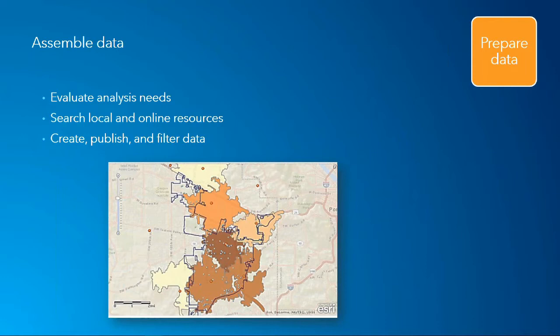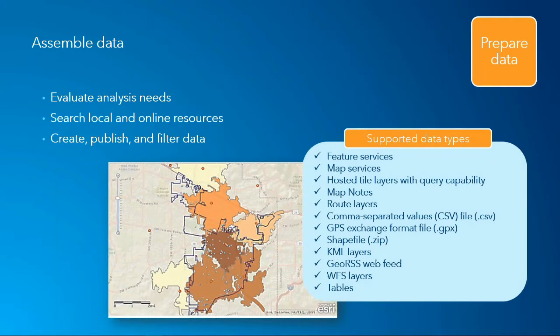In the prepare data step, this is assembling all the data needed for your analysis. Based on the question you're setting out to answer, what data sets do you need and where can you find them? It might be data your organization maintains locally, something you've already published online, or an external data source you download. You need to bring that into your environment and combine it with other data sources — existing web layers or raw data you need to publish and turn into a spatial layer.